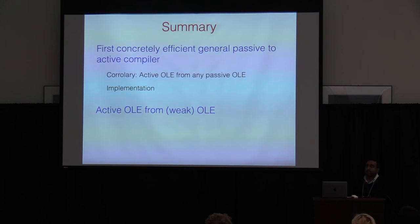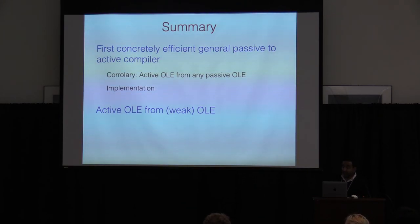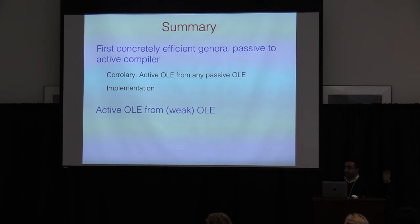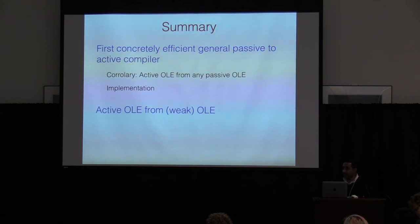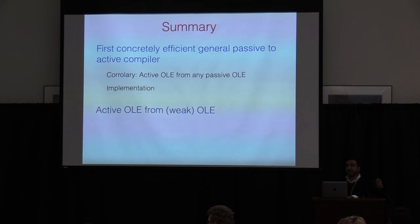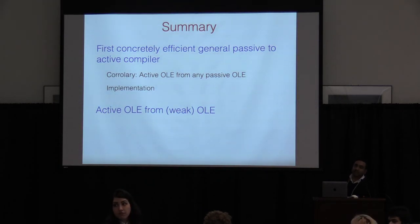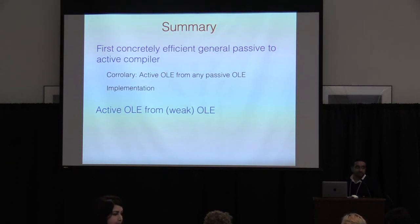Question: For two-party computation, how does this compare to garbled circuits with cut-and-choose? Response: You have to convert field arithmetic to Boolean, which is already an overhead. For passive-to-active in the Boolean case, there's work showing constant overhead using algebraic geometric codes, but otherwise the overhead is typically the security parameter — like 40 or about 10 for 40-bit security. We should take the rest of the questions offline.